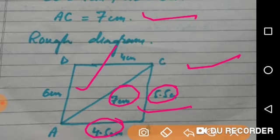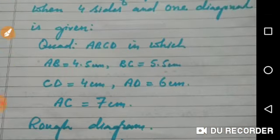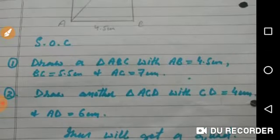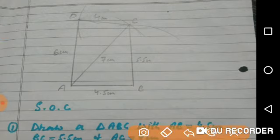To draw any quadrilateral, you need some geometrical instruments: a ruler and a compass with a sharp pencil. First of all, draw a line segment AB, 4.5 cm, with the help of ruler.